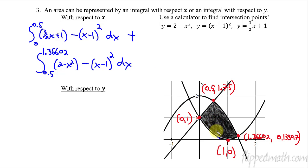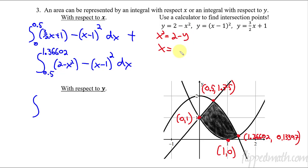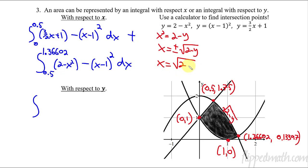Now let's set this up with respect to y. First, we need to convert the equations to be in terms of y, solving for x. For 2 minus x squared: rearranging gives x equals plus or minus the square root of 2 minus y. Since we only need the right side of that parabola, we use the positive square root of 2 minus y. For (x minus 1) squared: taking the square root gives plus or minus the square root of y, so x equals plus or minus the square root of y plus 1.